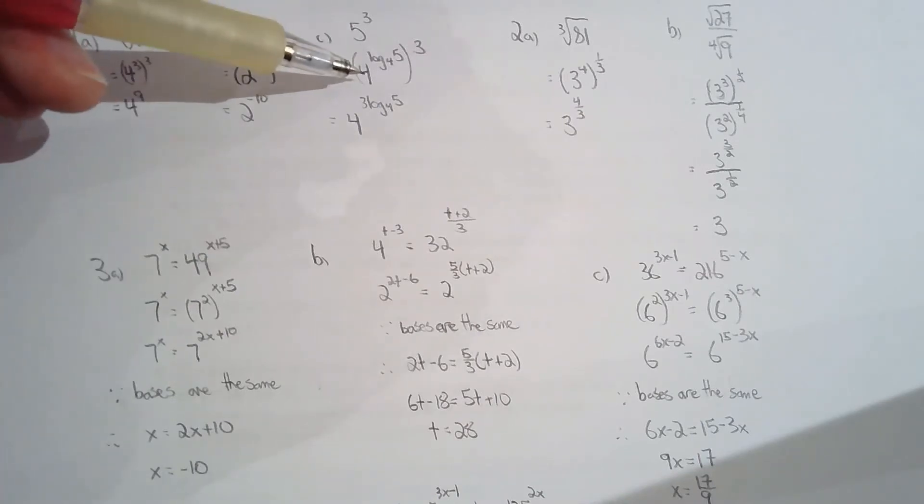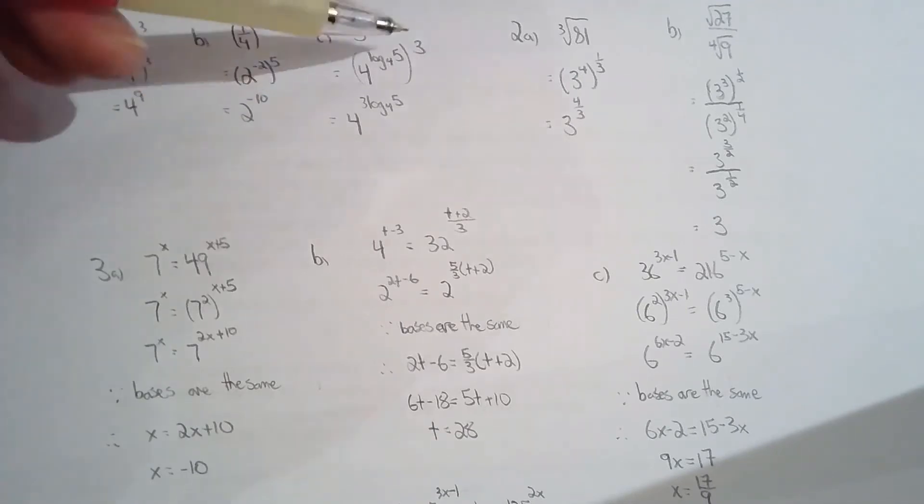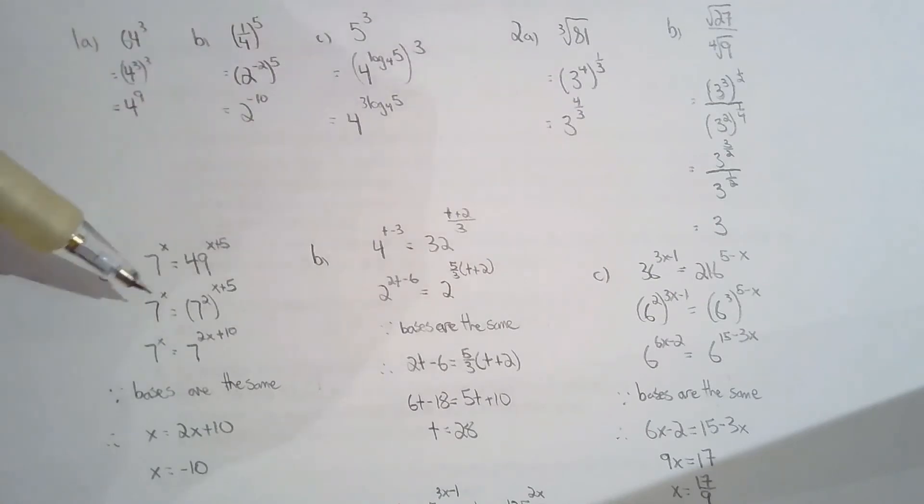So that's why 4 to the power of log base 4 of 5 is equal to 5. And this is a very powerful relationship because if you generalize this, you can actually change any two powers. If the bases are different, you can actually change them to have the same base using this relationship. Now of course you have to have a base that's greater than 0 and not equal to 1.